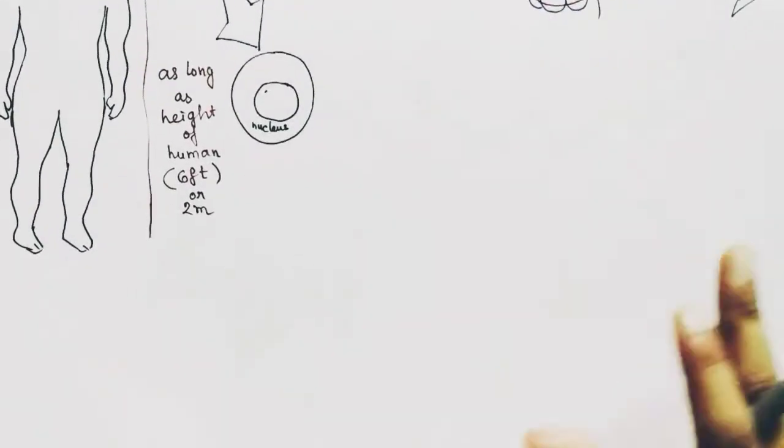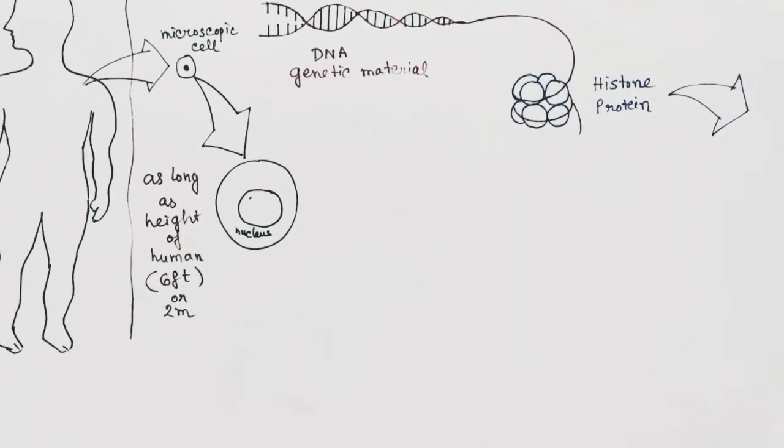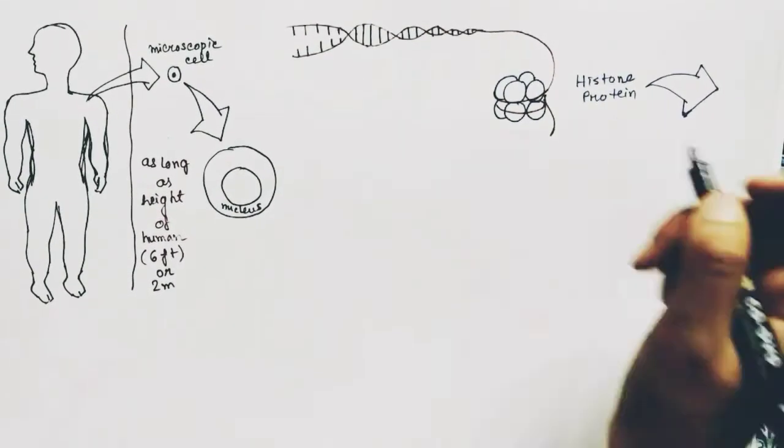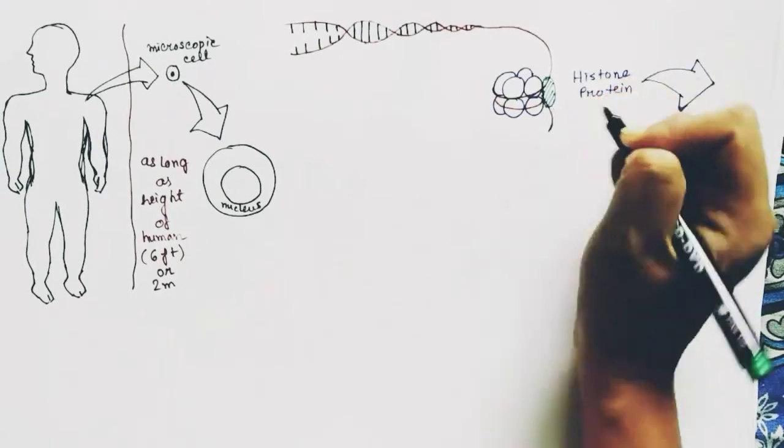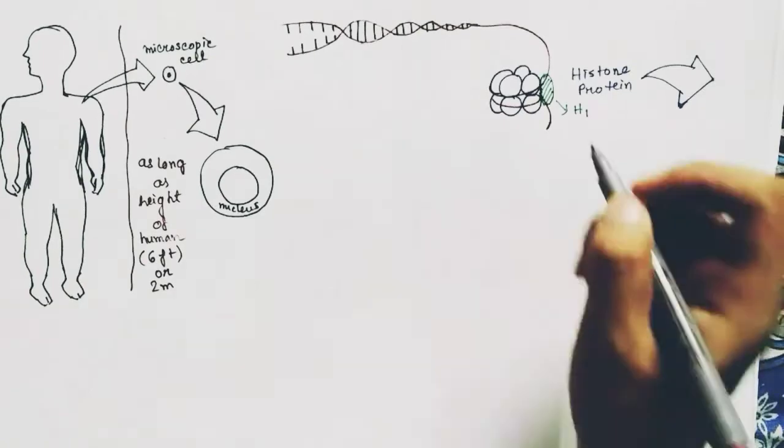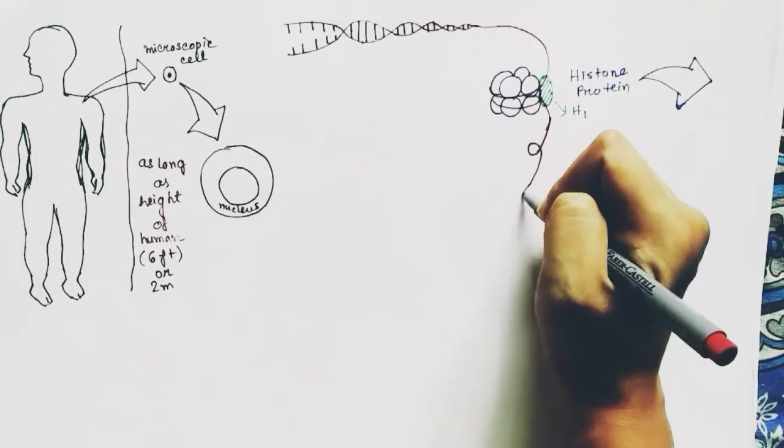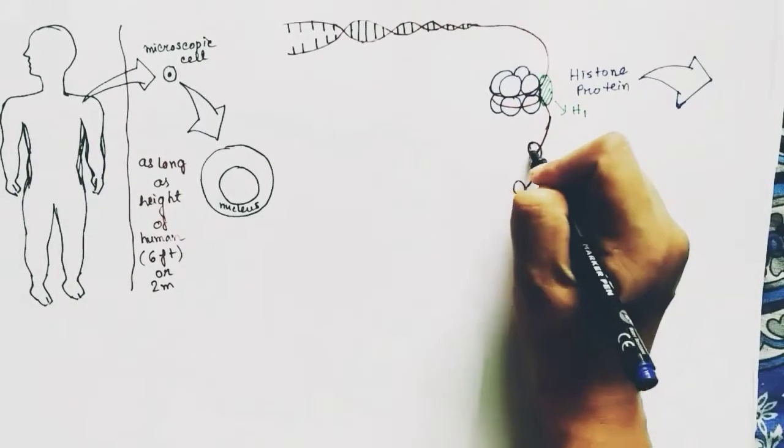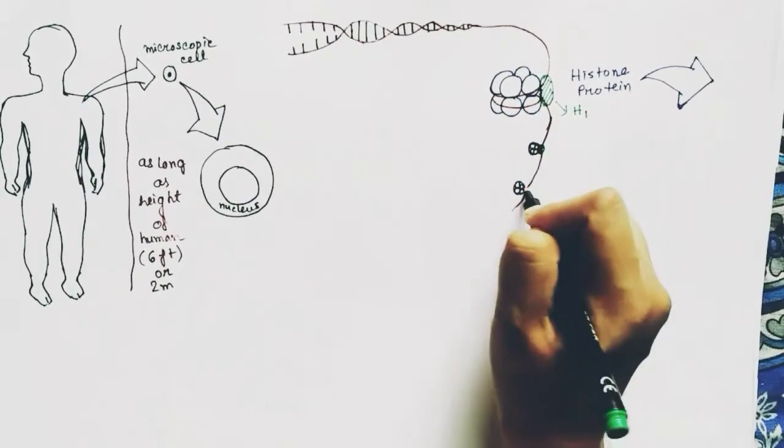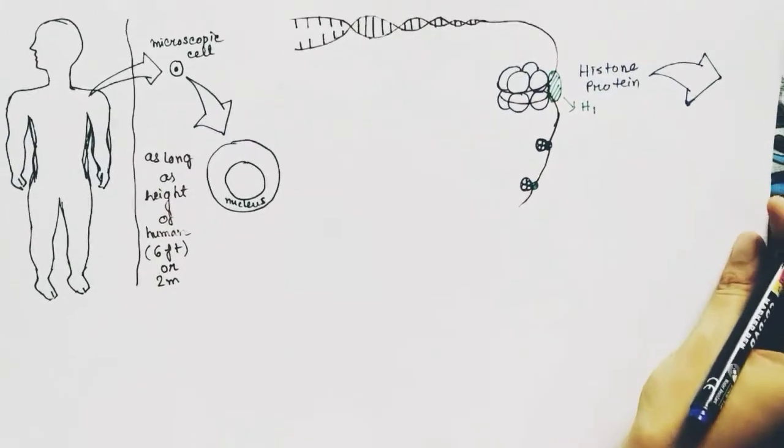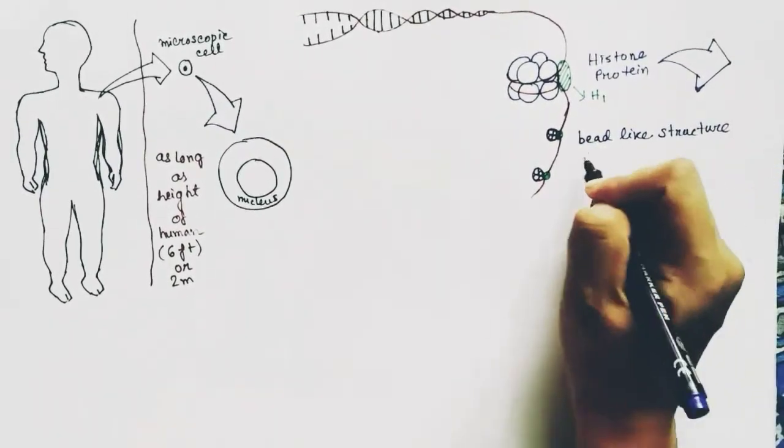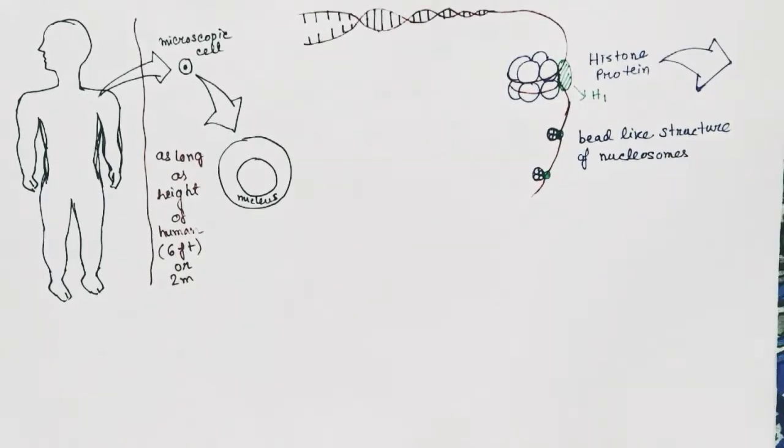Now after wrapping up, there are lot more histone octamers. The DNA thread keeps wrapping around the histone octamers, and the H1 proteins clip the DNA to the octamer, forming a structure like beads. This is called the bead-like structure of nucleosomes.